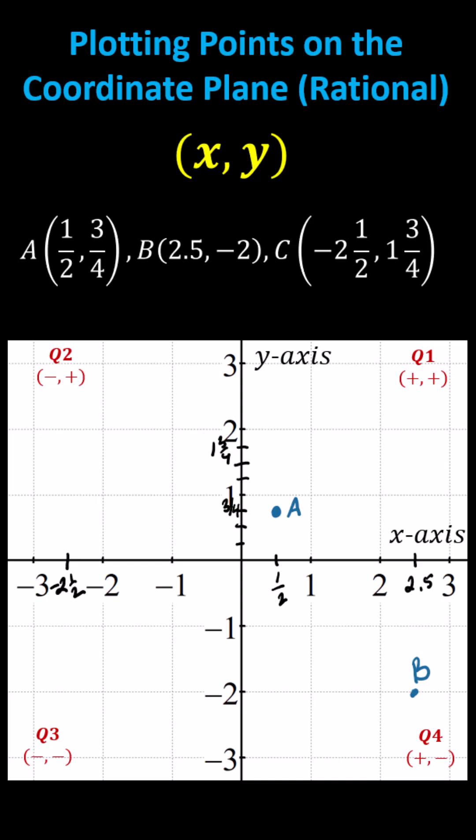To plot point C, because x is negative two-and-a-half, from the origin we move left two-and-a-half units. And then because y is one-and-three-fourths, we move up one-and-three-fourths units. This is the location of point C.